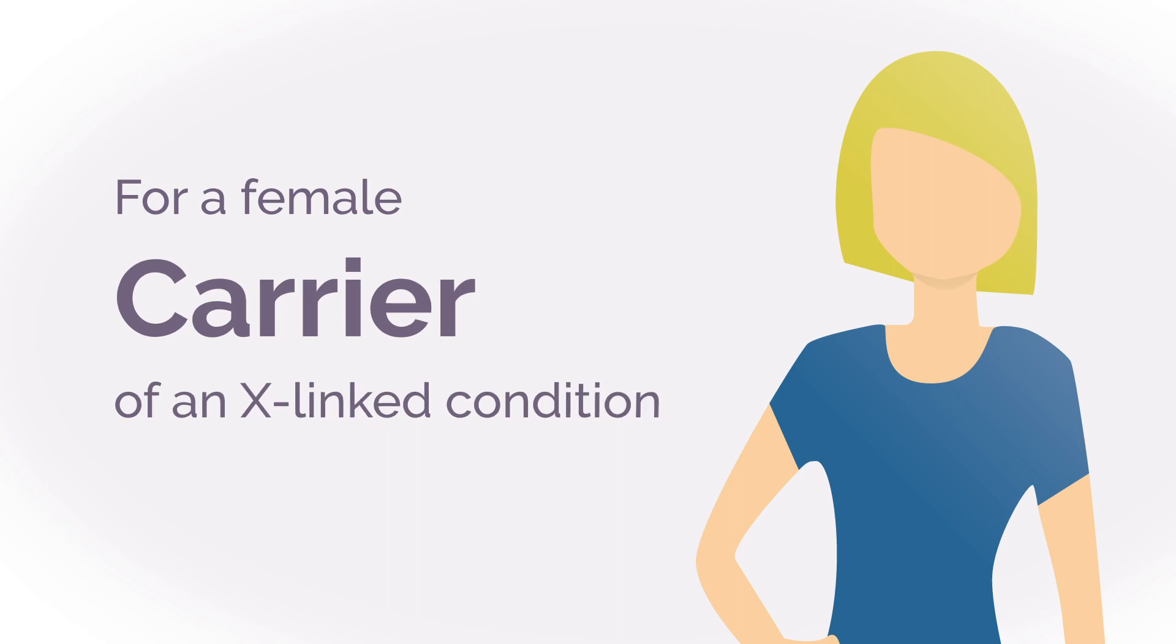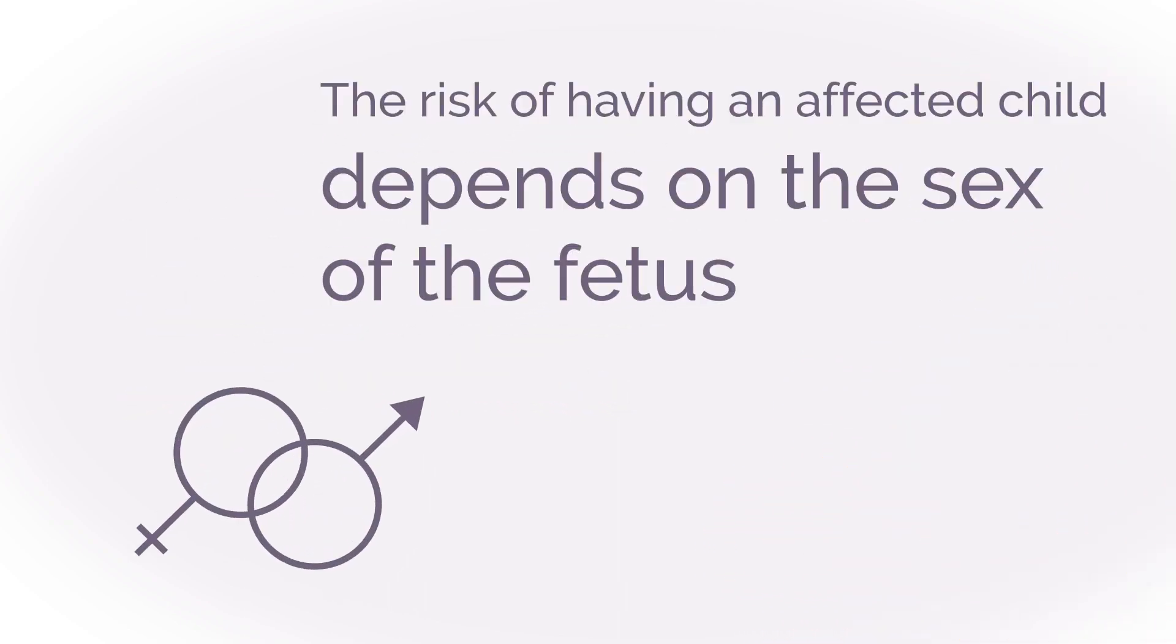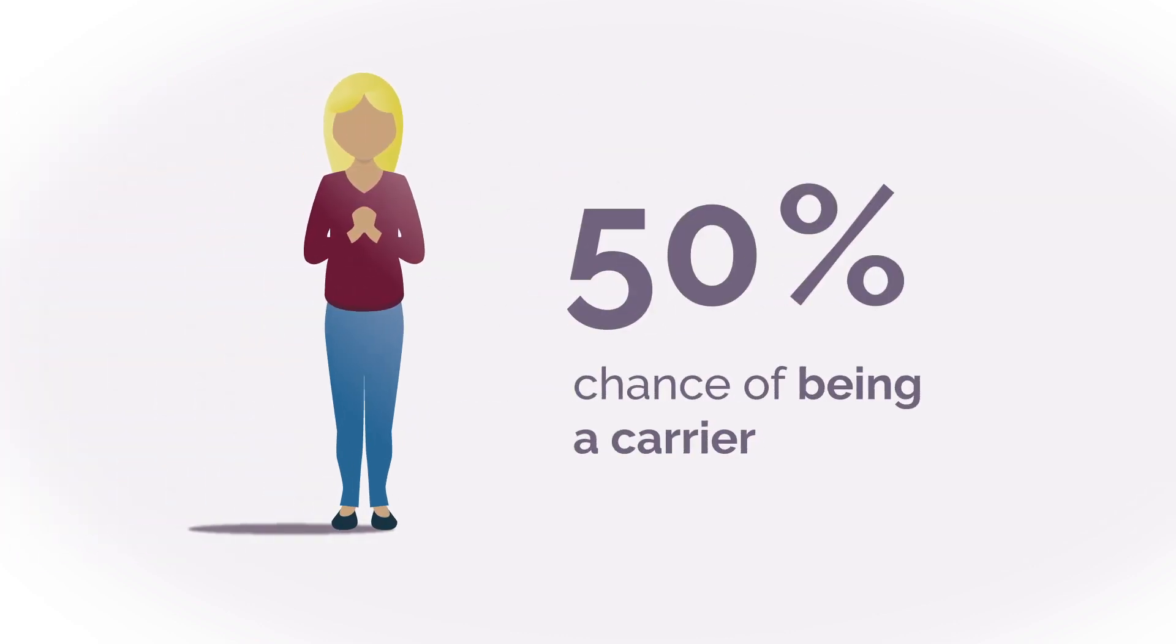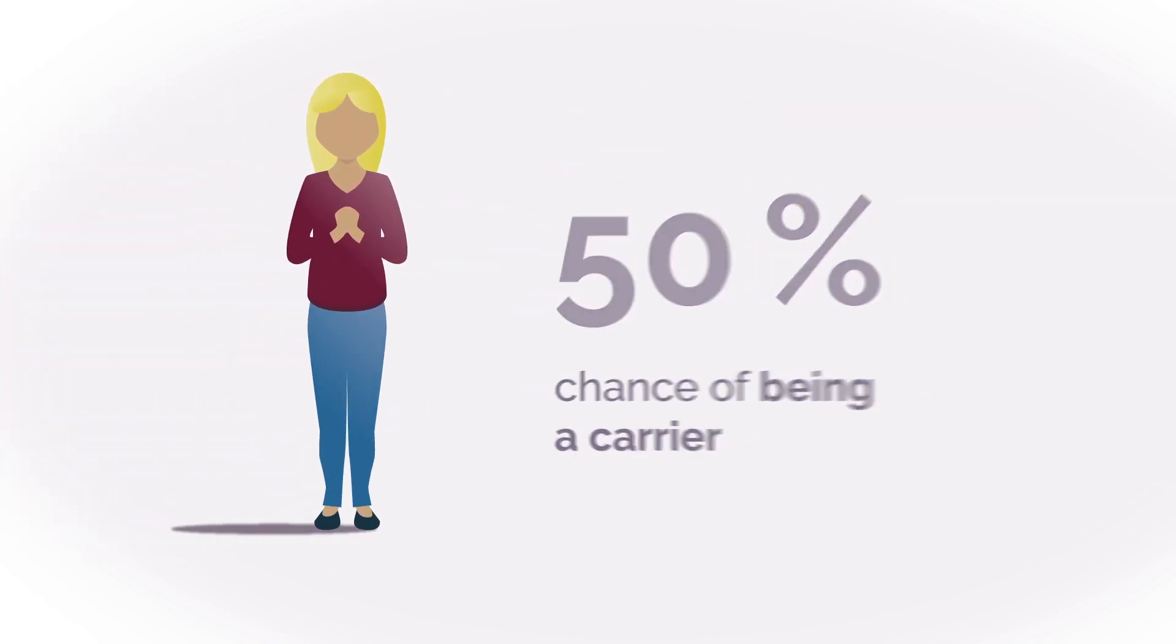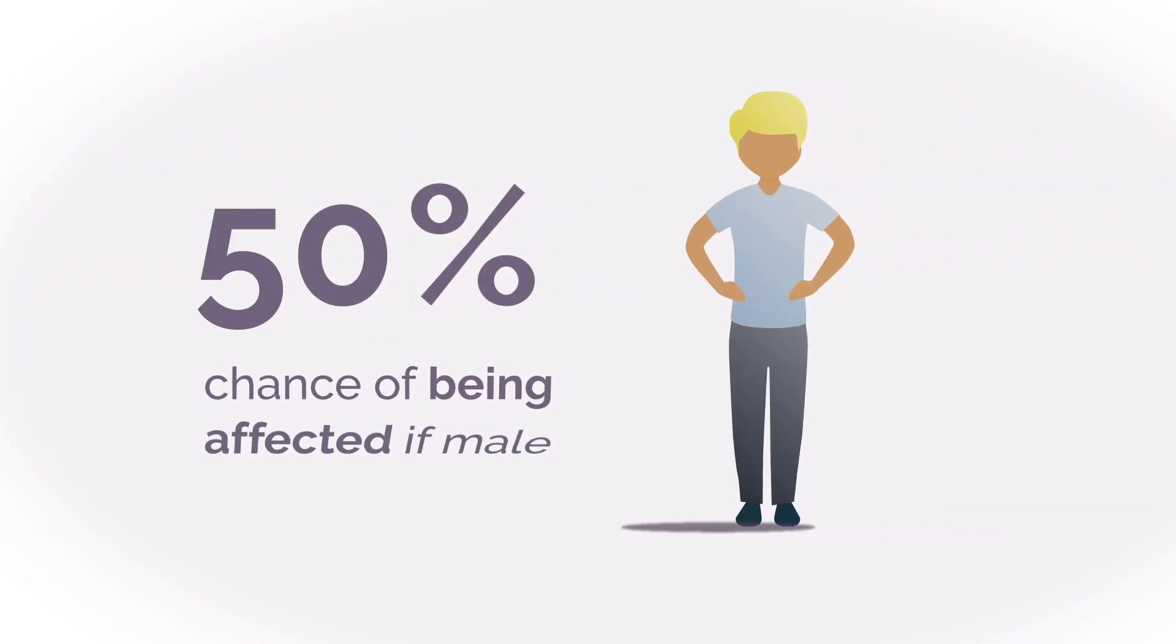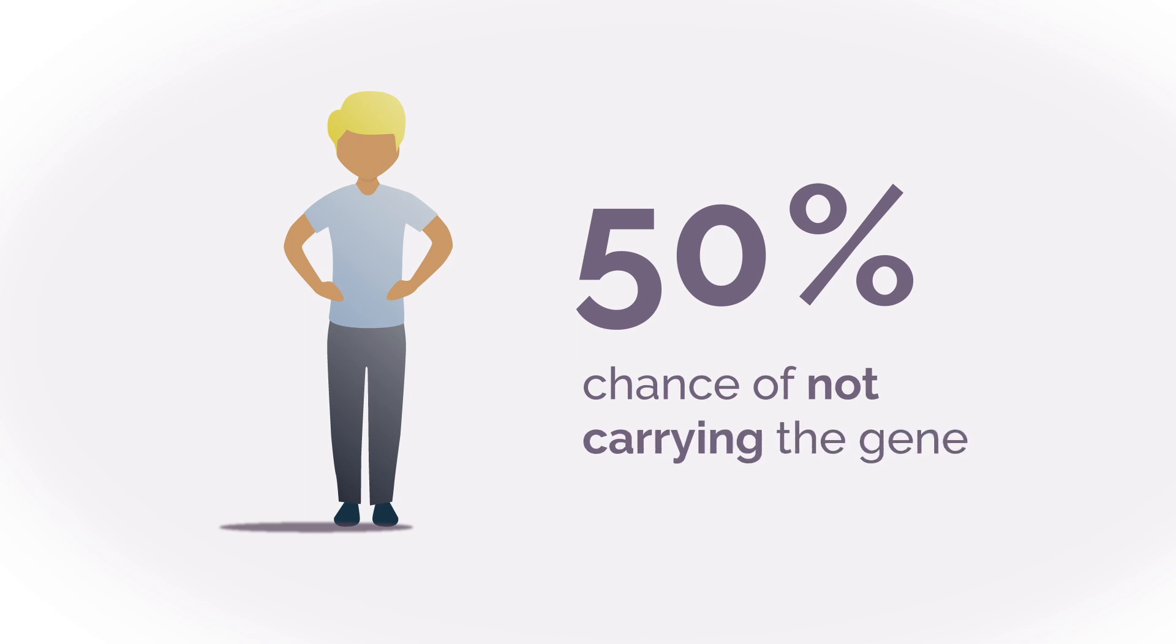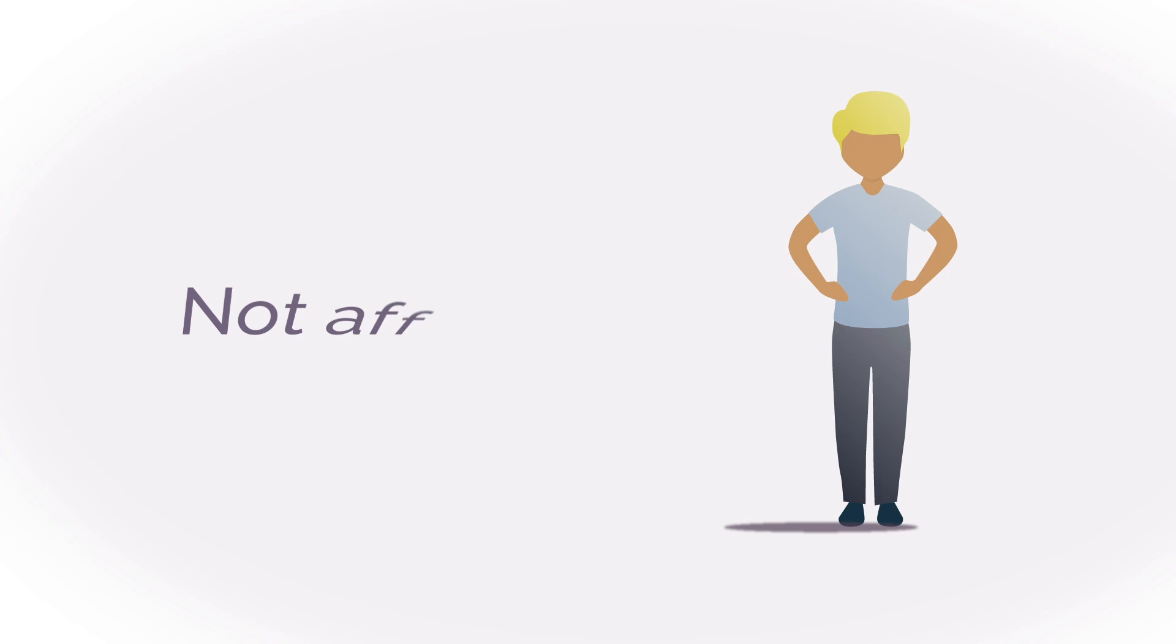For a female carrier of an X-linked condition, the risk of having an affected child depends on the sex of the fetus. If the fetus is female, there is a 50% chance of being a carrier. If the fetus is male, there is a 50% chance of being affected and a 50% chance of not carrying the gene with a pathogenic or likely pathogenic variant and therefore being unaffected.